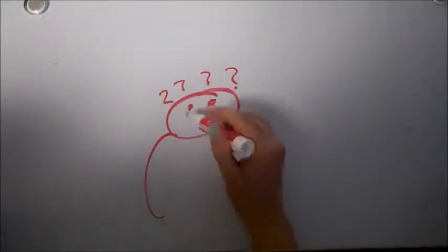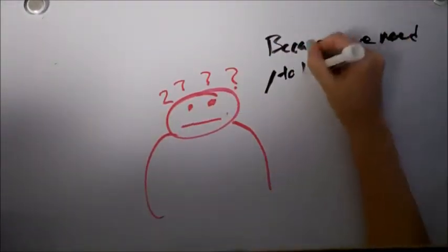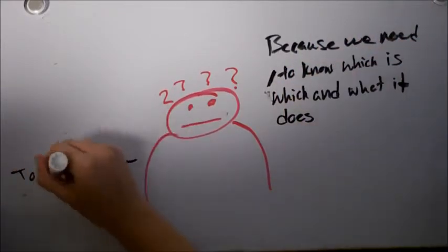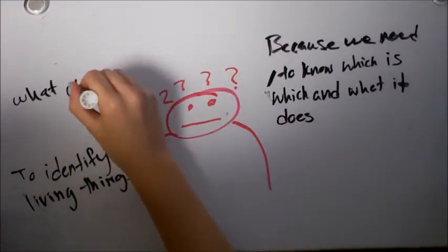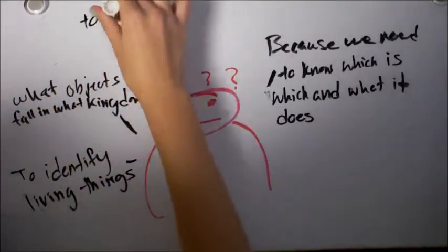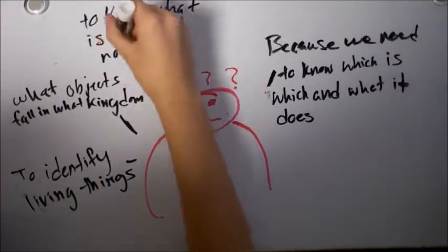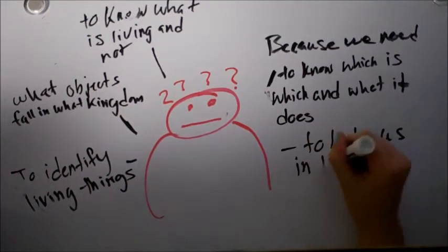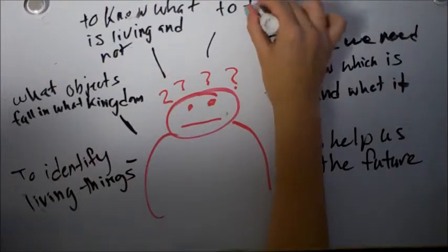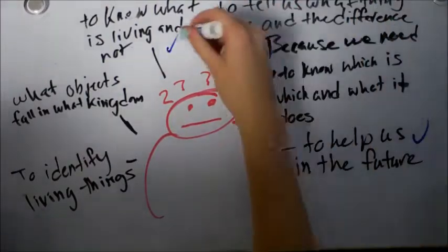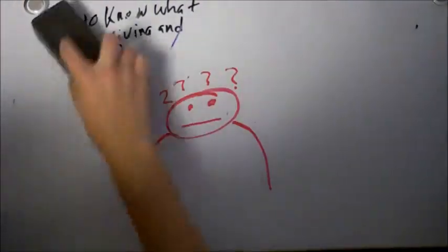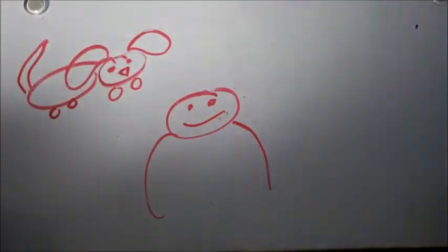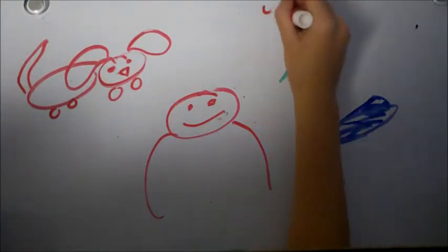So that was a lot to take in and a lot of big words for me to say. But what you should know overall is that you should know which is what and what it does. You need to identify things. You need to know what objects fall under. You need to know what's living and what's not. You also need to know for the future. And you need to know to tell what the difference is between things. But they're alright, so don't worry. And you'll get used to all this stuff. Oh, trust me, I did.